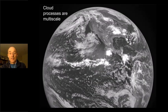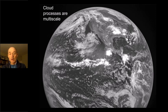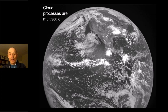What I'd like to talk about is machine learning as applied to the parameterization — the representation of cloud processes — in weather and climate models. First I'd like to give you an appreciation of the problem and an understanding of why machine learning is an attractive approach. This is a geostationary satellite image — you can see Baja California and Mexico in the upper part of the center of the screen.